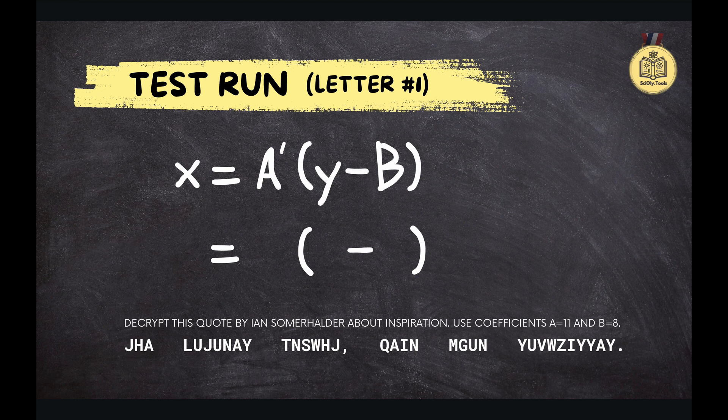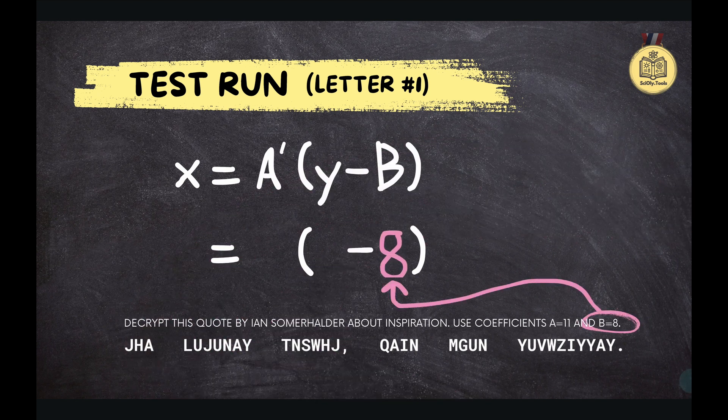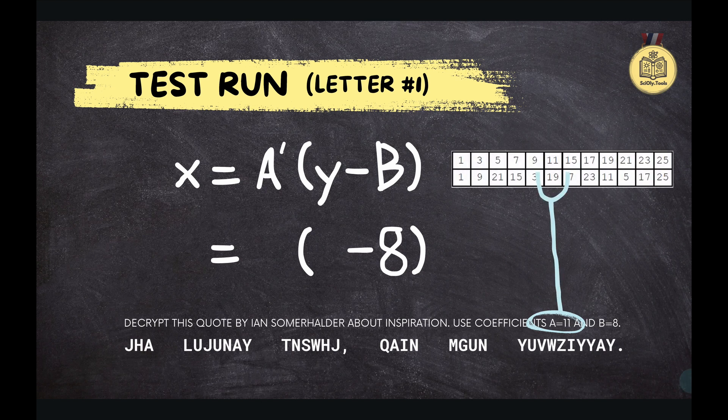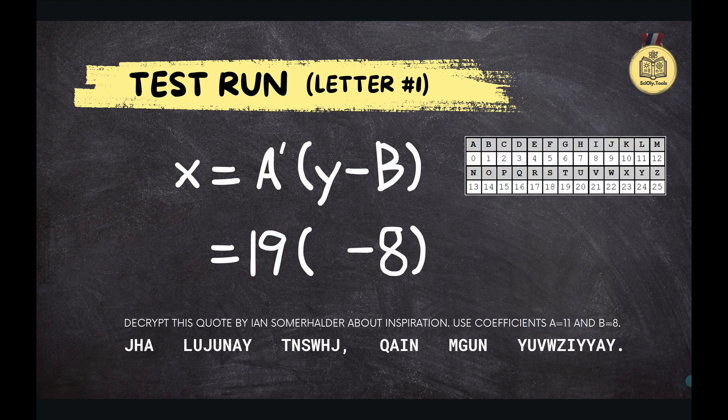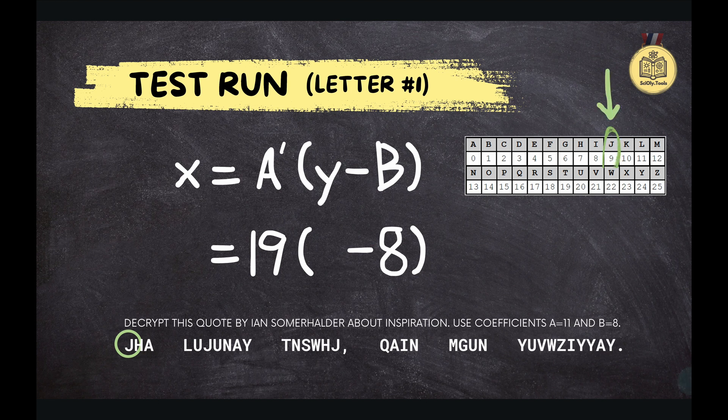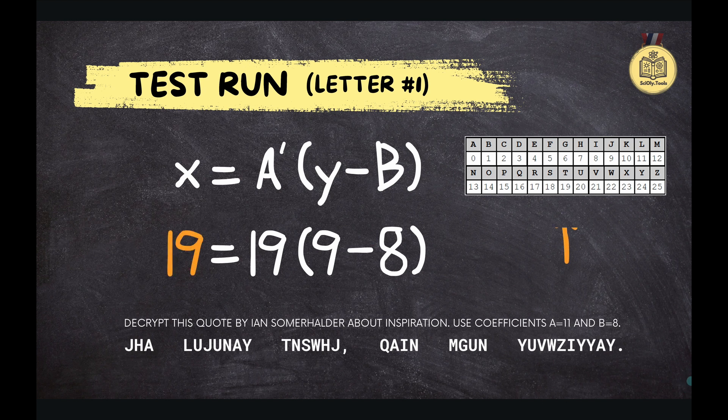So let's look at an example. For this puzzle, we're given A equals 11 and B equals 8. Checking our A inverse table, we see that the inverse of 11, our A value, is 19. According to our table, J is represented by the number 9. So if we plug these values into our formula, we get X equals 19 times the quantity 9 minus 8. That gives us 19, which, when we look at our letter table, translates to the letter T. So our first decoded letter is T.